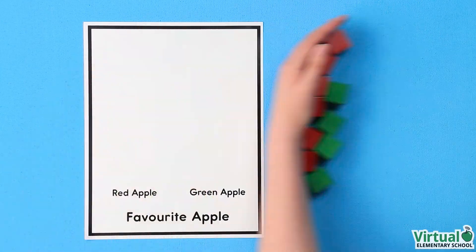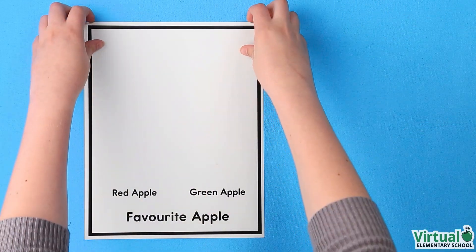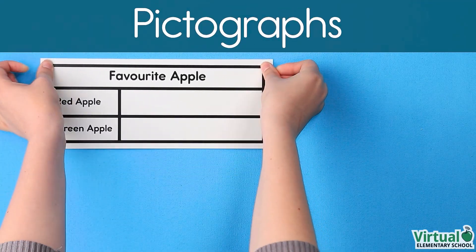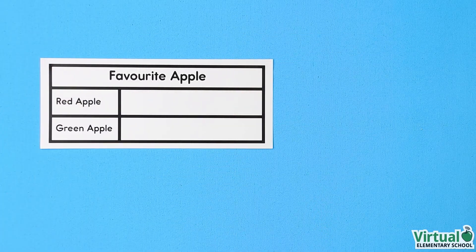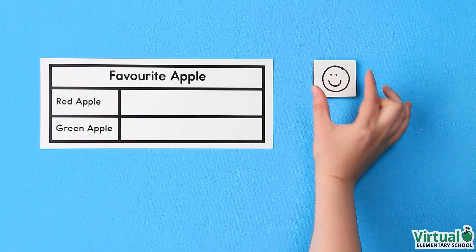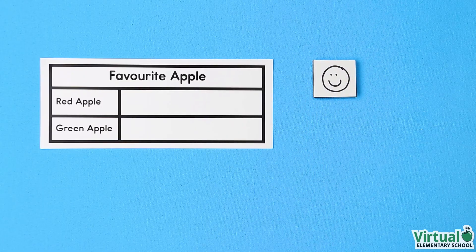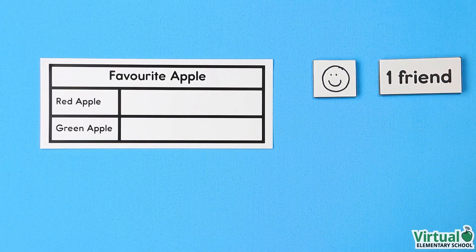Now Hanna is going to make a pictograph. Pictographs use symbols to show data. The symbol that Hanna has chosen is a smiley face. Each smiley face will represent 1 person.